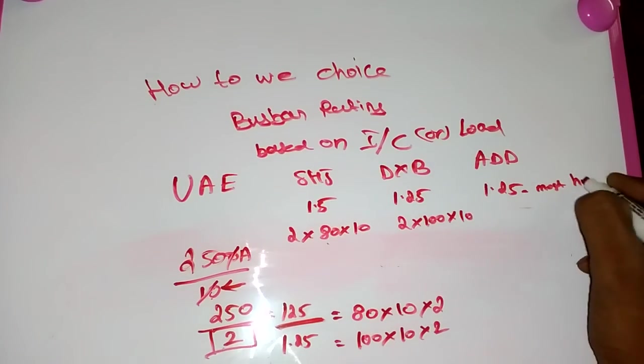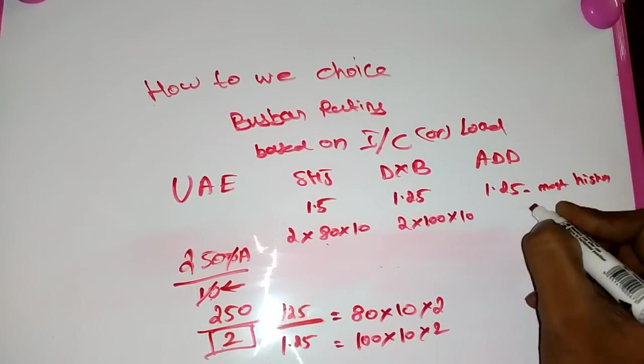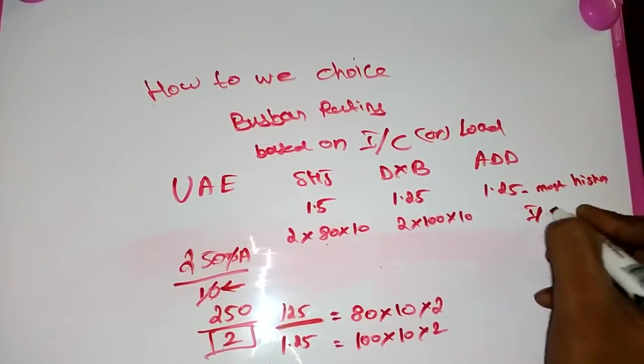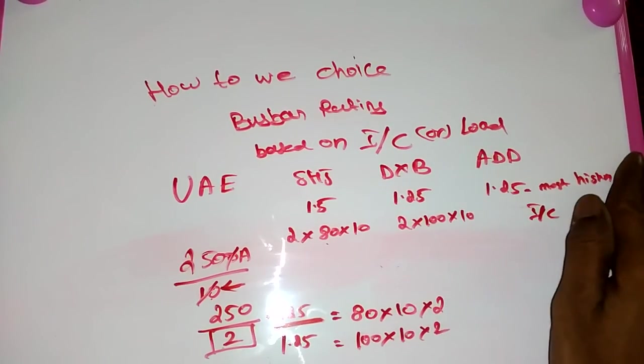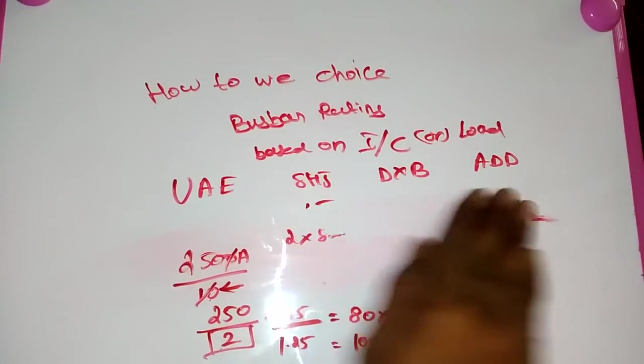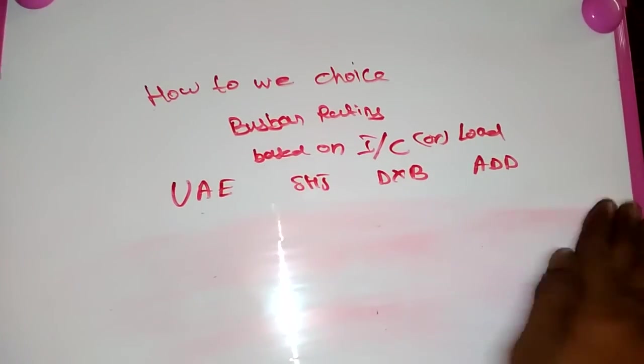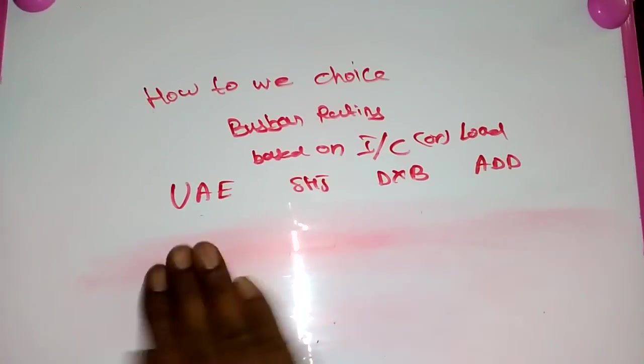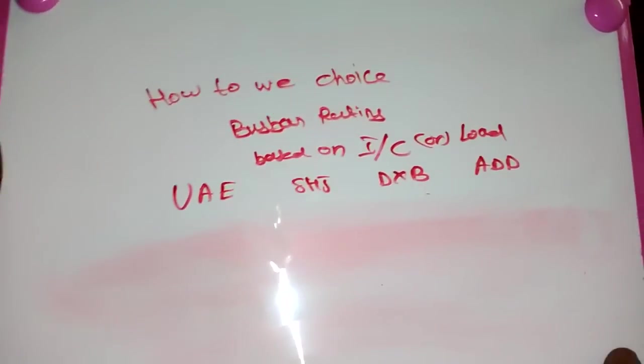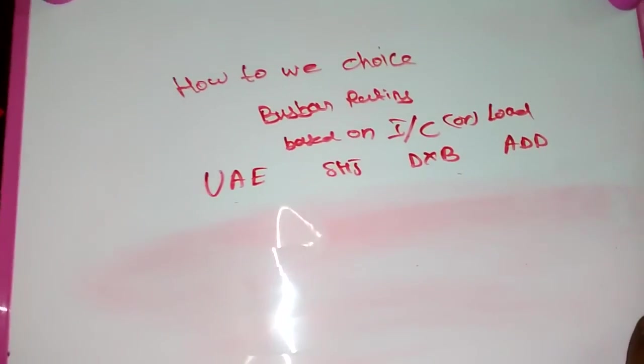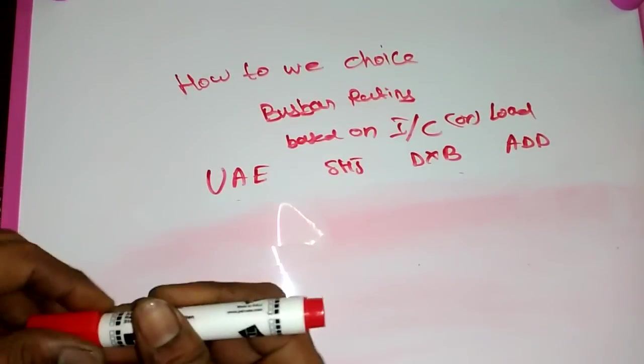Same like that Abu Dhabi, because here also 1.25 in this multiplication factor. Mostly for higher rating incoming only. This is a very simple method to choose the busbar rating on Abu Dhabi and Sharjah and Dubai. Otherwise, I am giving some important busbar rating to choose for LV panels.